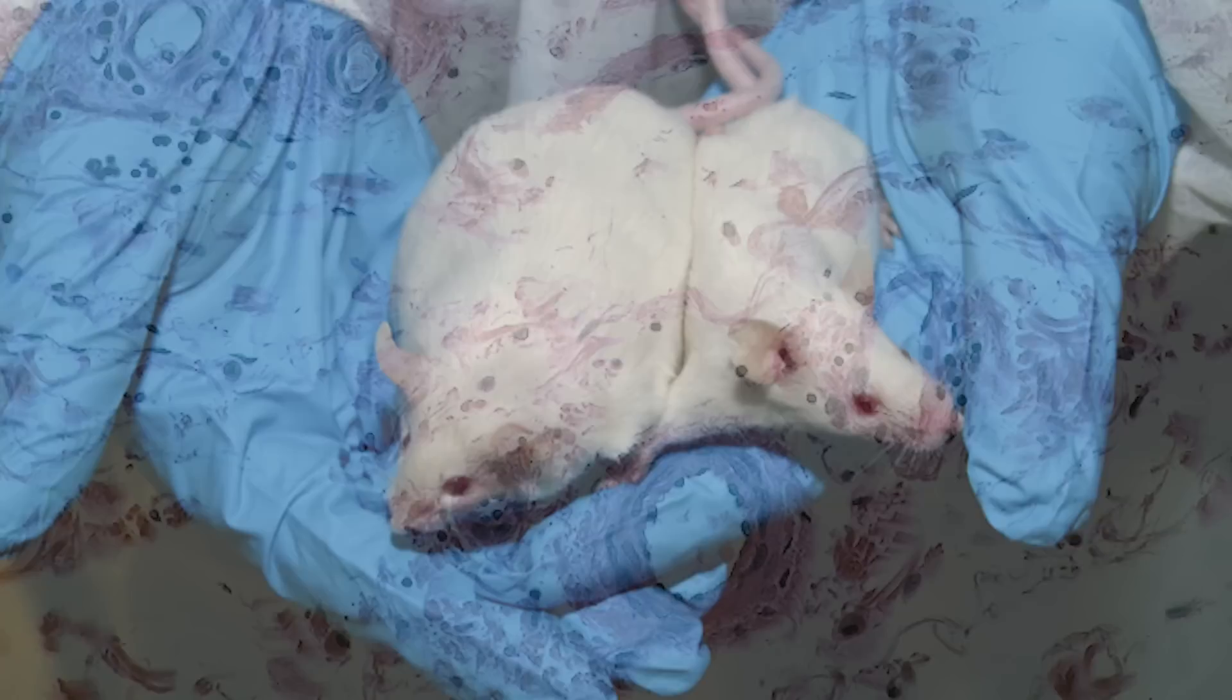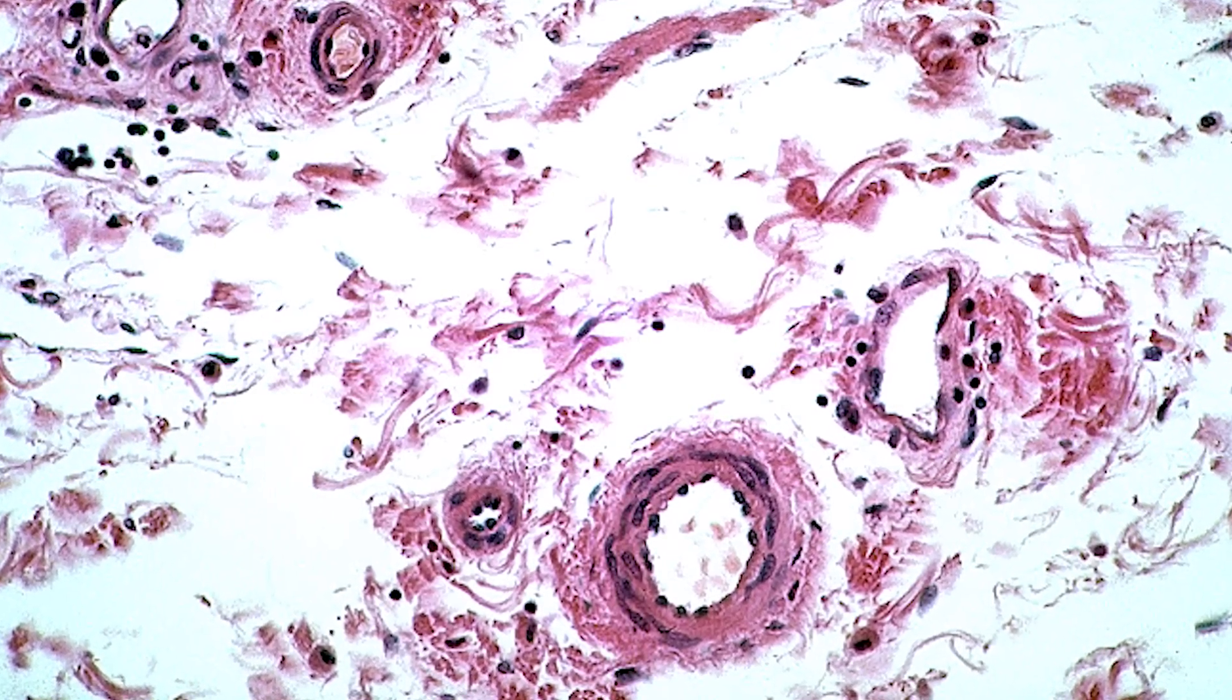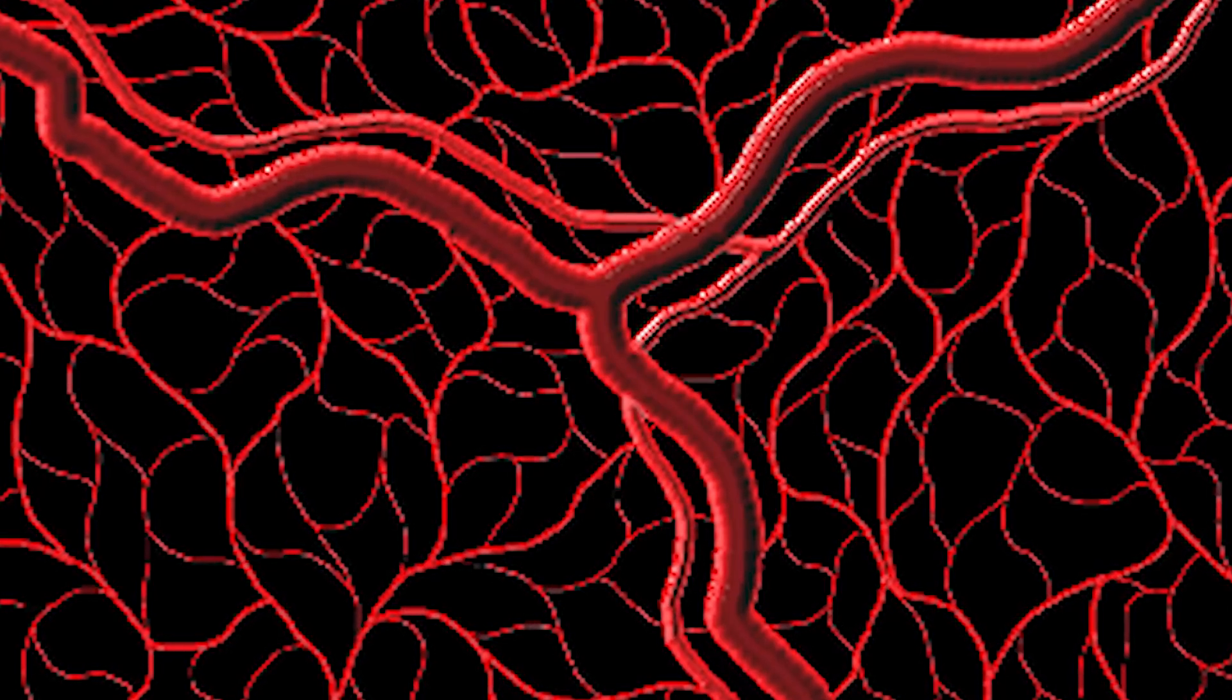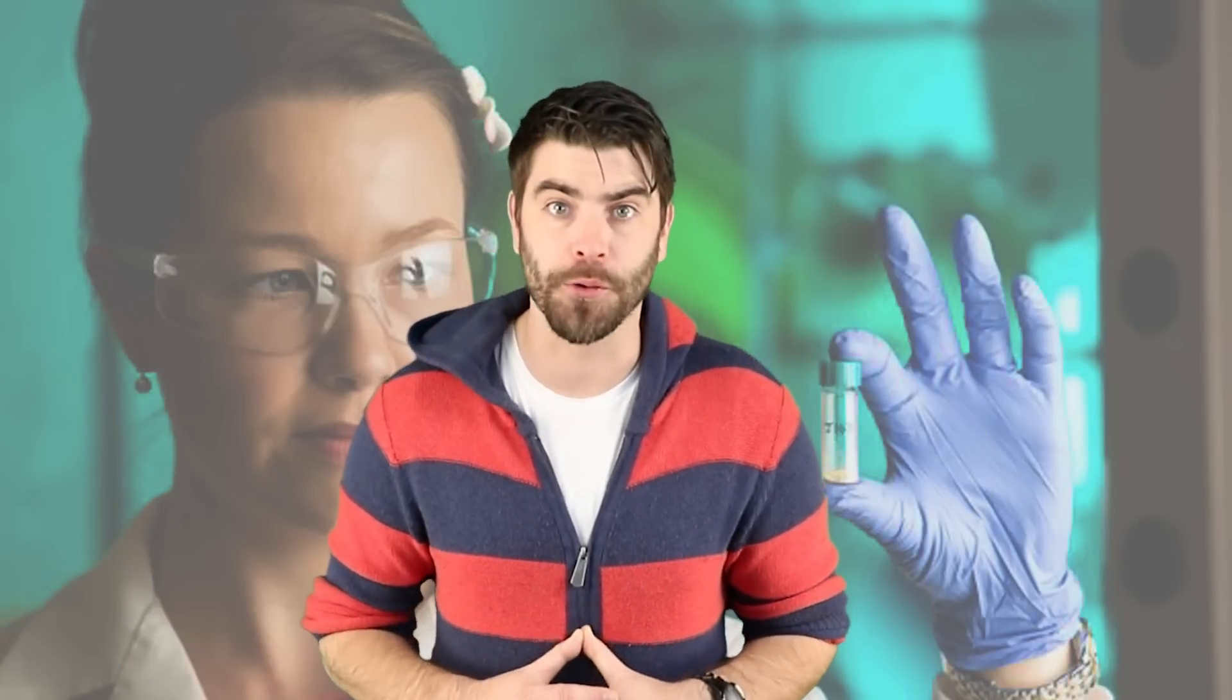Another notable effect was that the drug J147 prevented the leakage of blood from the micro-vessels in the brains of old mice. Damaged blood vessels are common for those suffering from Alzheimer's, so they can chalk this up as another win.